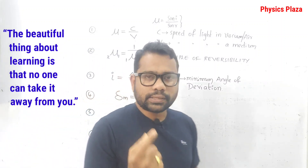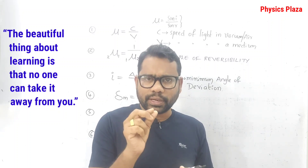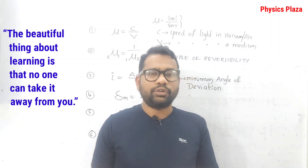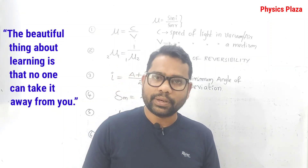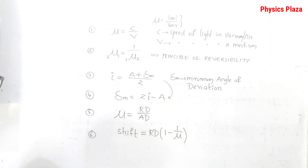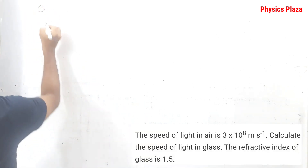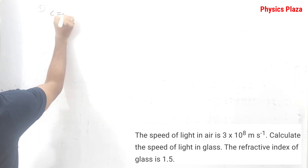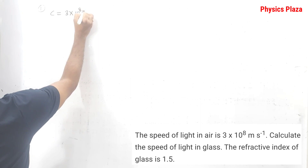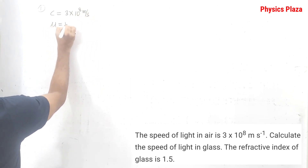We have a few numericals in exercise 4A, exercise 4B, and also some numericals in exercise 4C. Almost 7 to 8 numericals are there in total. We will discuss each and every numerical in detail. So first numerical: it is given that the speed of light in vacuum or air is 3 × 10⁸ meter per second and the refractive index of glass is given as 1.5.